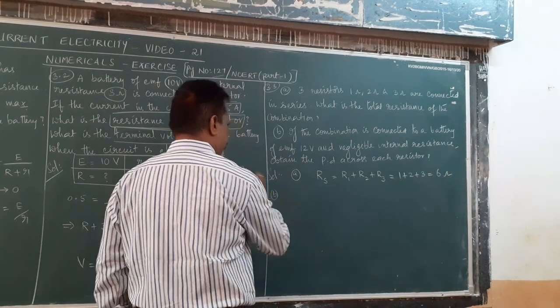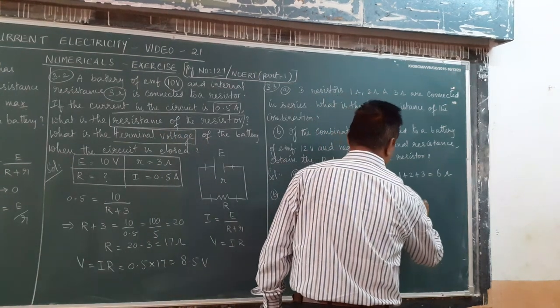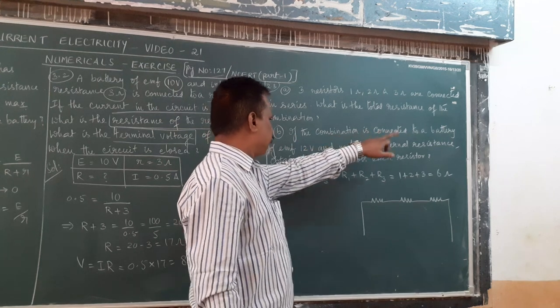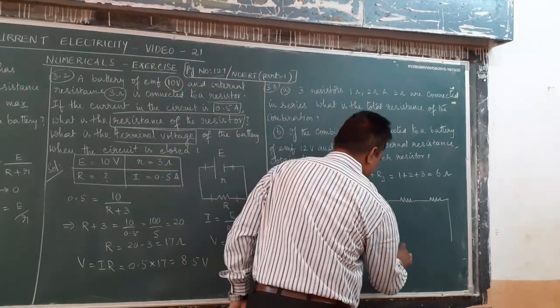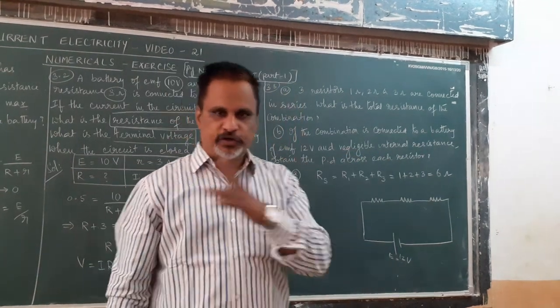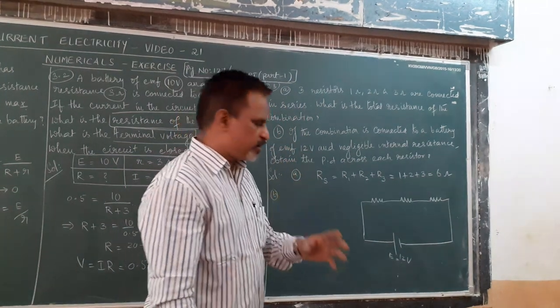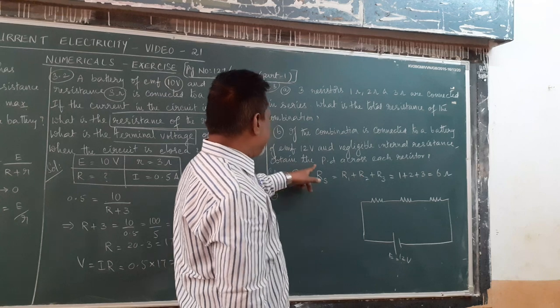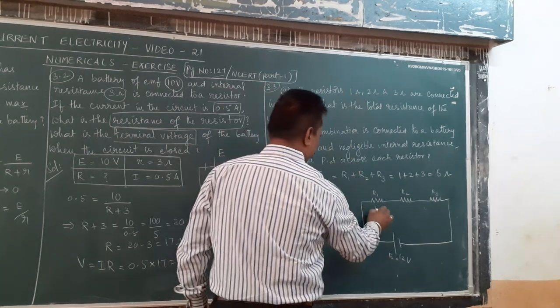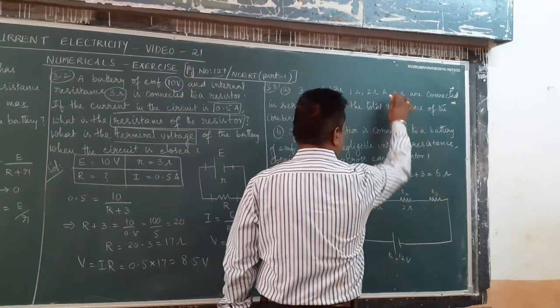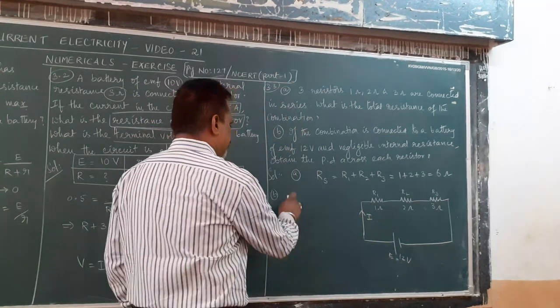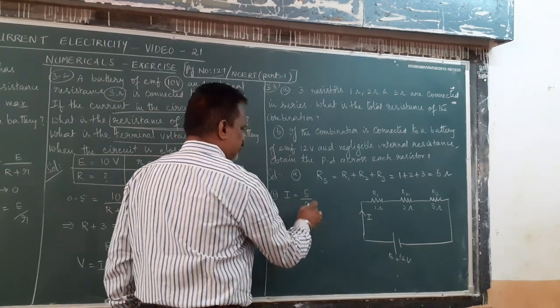For the second part, I should draw the circuit diagram. If this combination is connected to a battery of EMF 12 volt with negligible internal resistance, obtain the PD across each resistance. Suppose this is R1 equals 1 ohm, R2 equals 2 ohm, R3 equals 3 ohms. In series combination, same current flows.